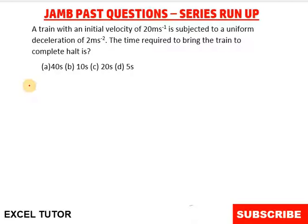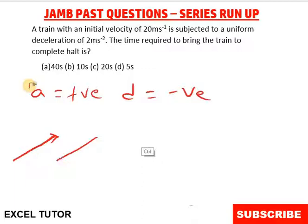Now before we proceed to solving our question, I believe we all already know what deceleration means. Deceleration is the opposite of acceleration. So if acceleration equals positive, then we can say our deceleration equals negative. So if a car is accelerating, it goes up. Or if a car is decelerating, it comes down. So that being said, we can proceed to solve our question.